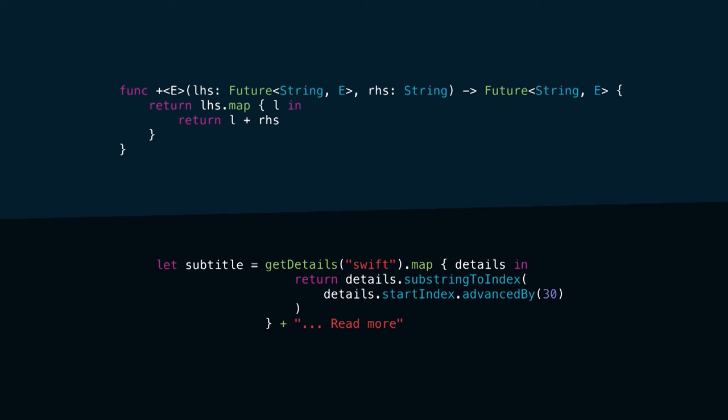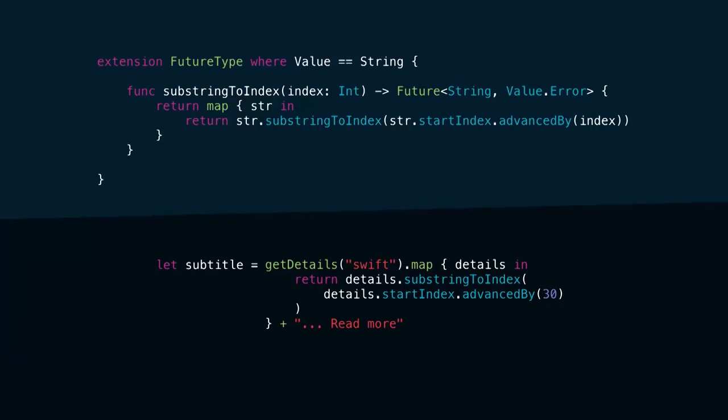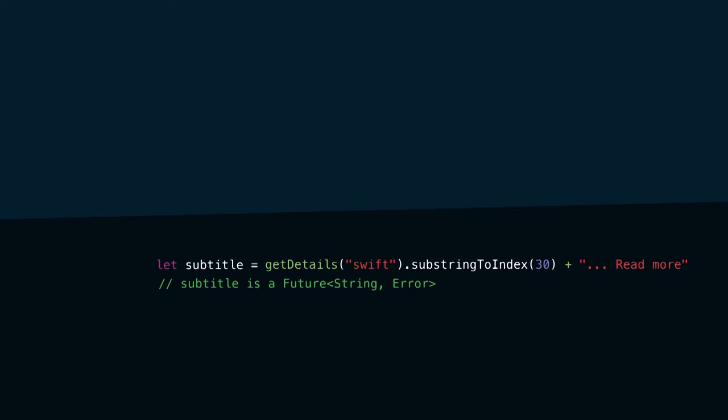With that operator overload in place, you can get rid of the second map. I also want to get rid of the first map. What we could do is write a protocol extension on the future that will only work for future strings, basically adding the substring method to the future, which returns a future string. That allows us to get rid of the first map as well, and this looks really elegant. But you have to write a lot of code — you could automate it by generating all the operator overloads and methods on future for specific types like future strings and future images, but that would be a lot of code.